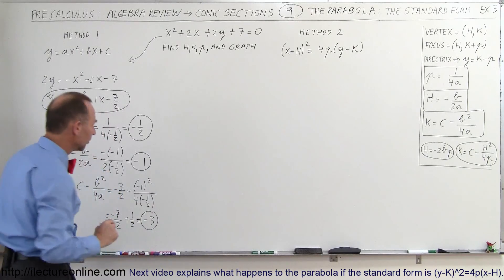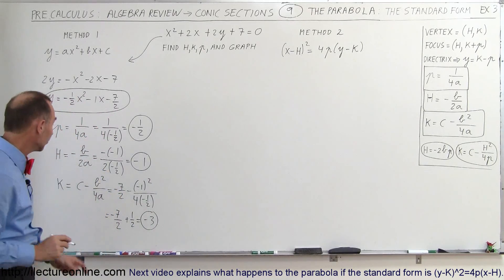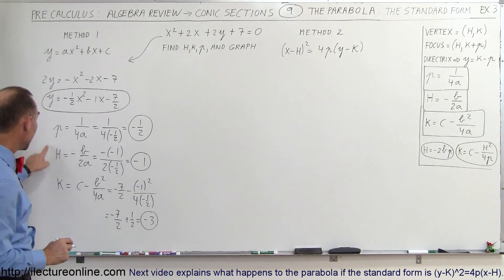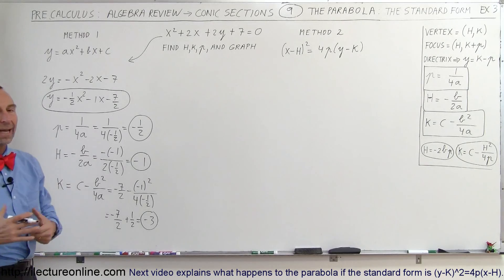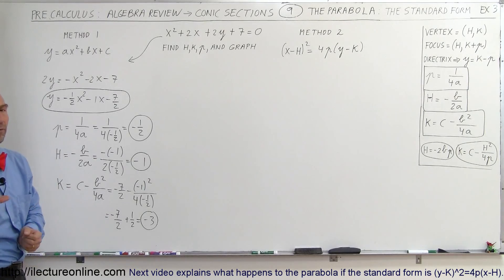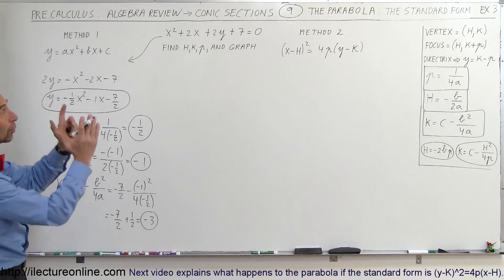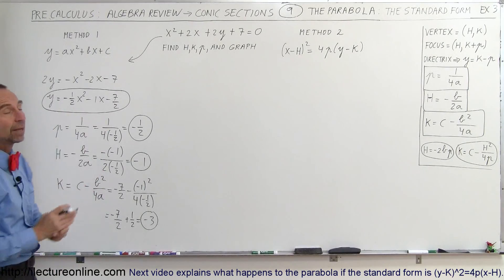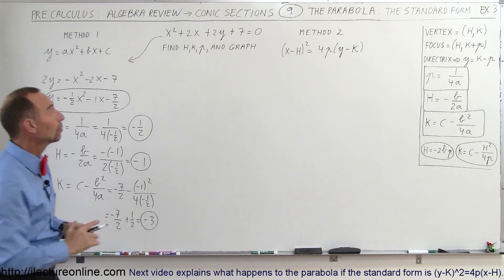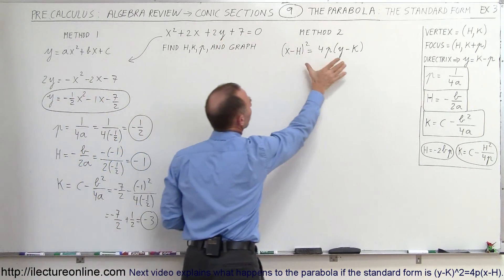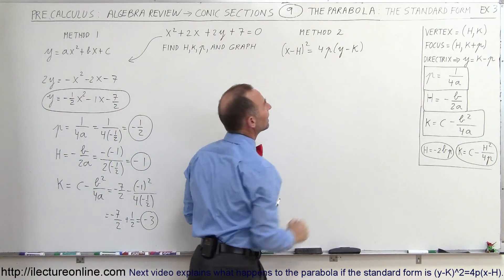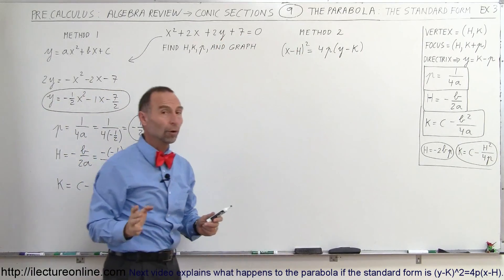Now we have values for p, h, and k. Before we graph it, we're going to use our second method, which means taking this equation and putting it in standard form.